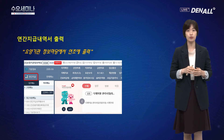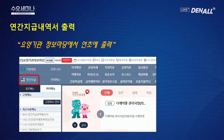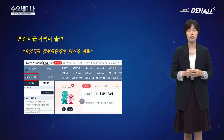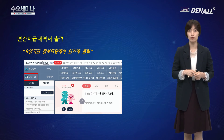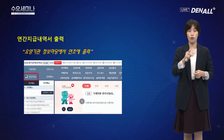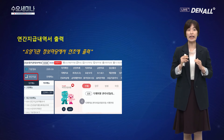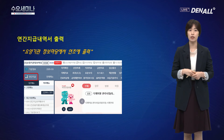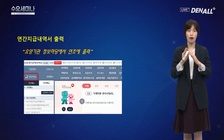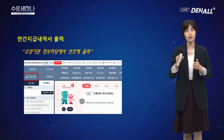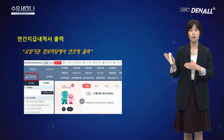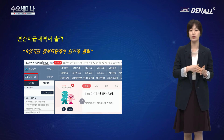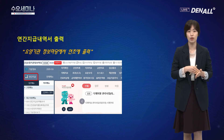사업장 현황 신고할 때 출력하시는 서류 중 하나가 요양기관 정보마당에서 연간지급 내역서 출력인데요. 연간지급 내역서는 연초에 요양기관 정보마당에서 일정 기간 동안만 제공합니다. 간혹 부지런한 세무사분들이 연초에 빨리 연간지급 내역서를 요청하시는 경우가 있는데, 들어가도 아무 내역도 안 뜨는 경우가 있습니다. 공단에서 아직 메뉴를 만들어 주지 않았기 때문이고, 보통 사업장 현황 신고 시작 후 일주일에서 열흘 정도 지나면 메뉴가 활성화됩니다.